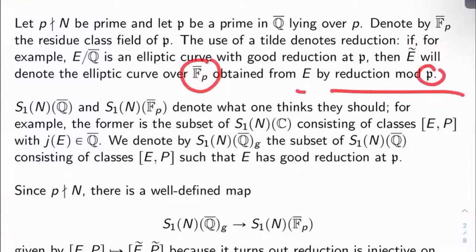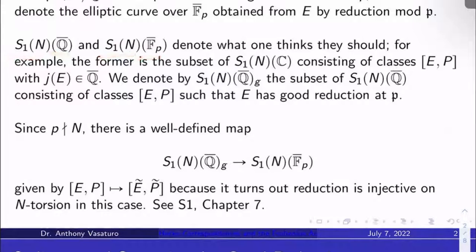So S₁(N)(Q̄) and S₁(N)(F_℘) denote what you think they should. For example, they're both just enhanced elliptic curves for Γ₁(N) over Q̄ and F_℘ respectively.